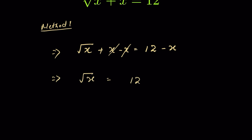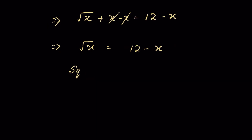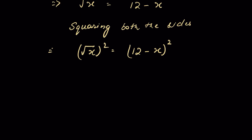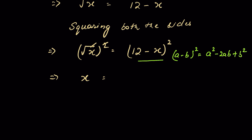Squaring both sides: the square root of x squared equals (12 minus x) whole square. The square root is removed by the square, giving x equals (12 minus x)². This is in the form of (a minus b) whole square, which expands as a² minus 2ab plus b².